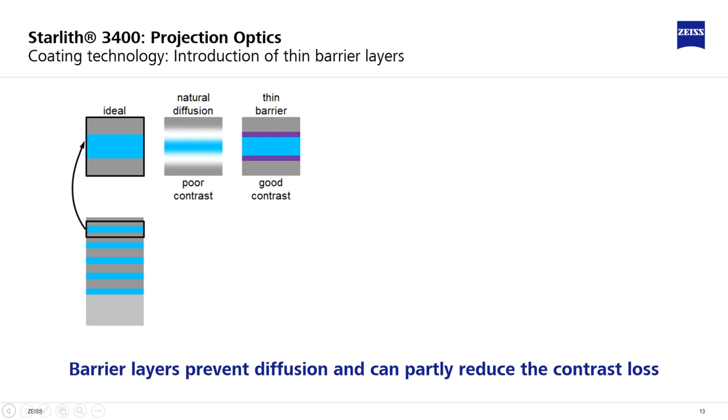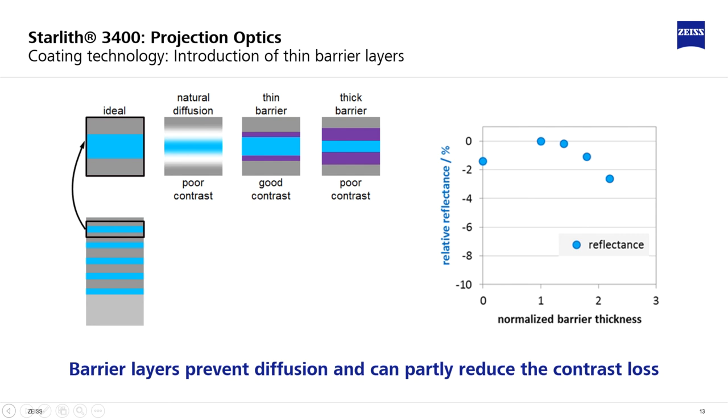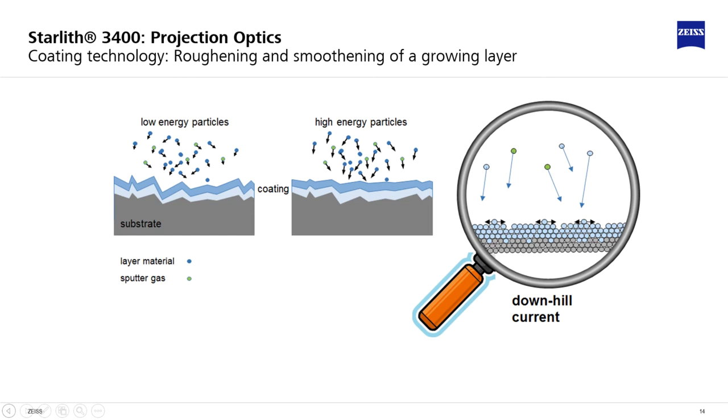In case of a barrier which is thinner than the natural mixture zone, the index contrast is improved. If the barrier layer is made thicker, the index contrast is reduced again and reflectance is lost again. It turns out that there is a narrow regime of barrier layer thicknesses where the contrast is best. Effective barrier layers can enhance the peak reflectance by one to two percent.